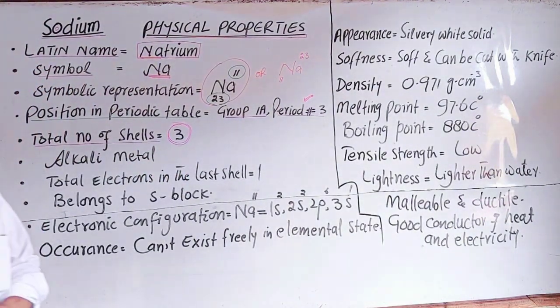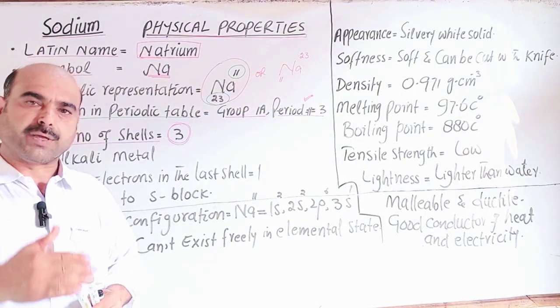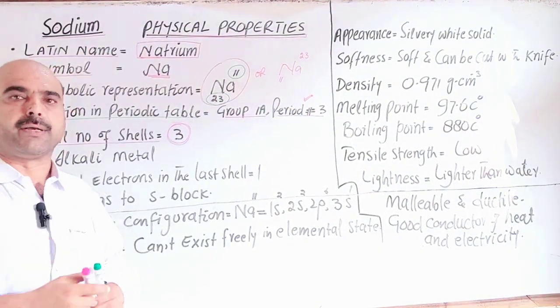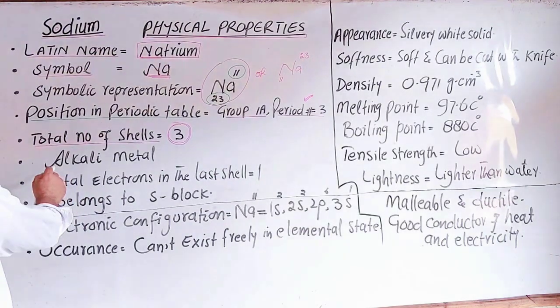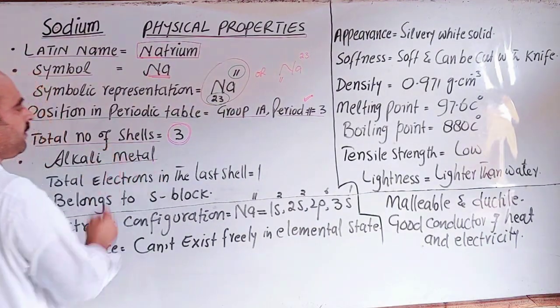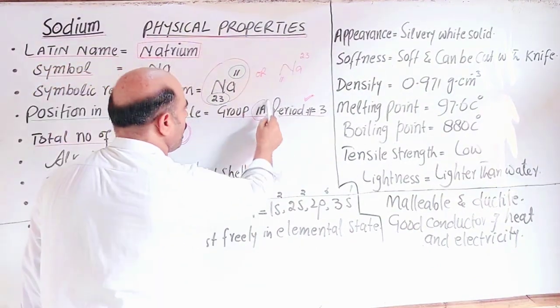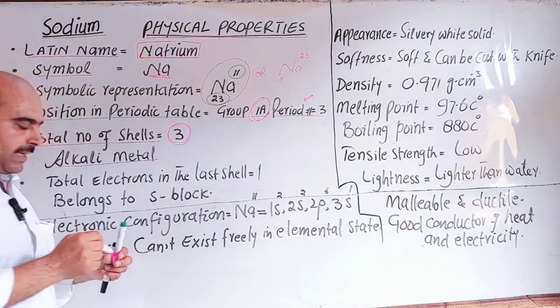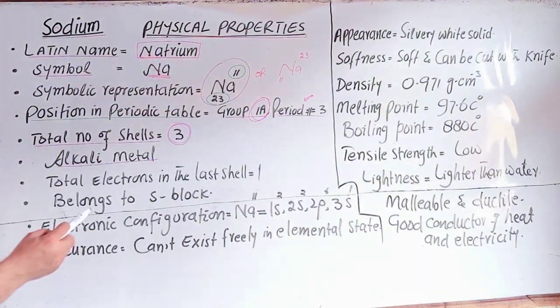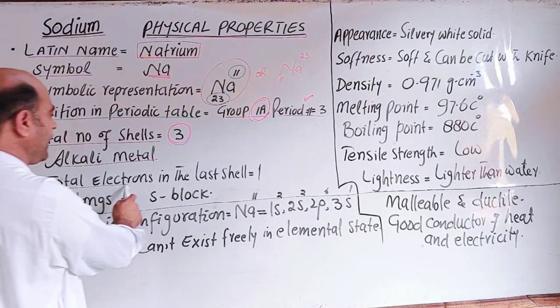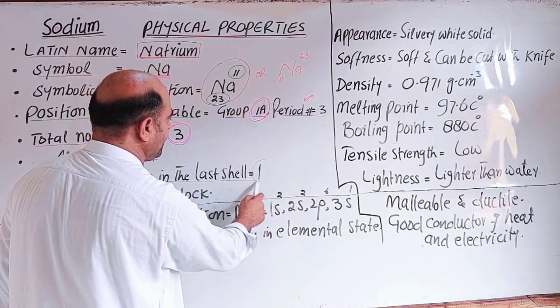Group 1A elements are called alkali metals, except hydrogen which is a non-metal. Sodium is an alkali metal. The group number indicates the total number of electrons in the last shell, so total electrons in the last shell equals one.